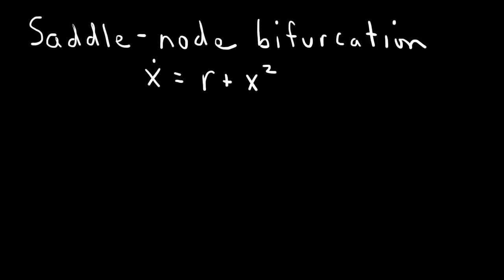Here I want to explain the saddle-node bifurcation. This is a bifurcation which occurs in a nonlinear equation — a one-dimensional bifurcation. The normal form of this bifurcation is x-dot equals r plus x squared, where r is the bifurcation parameter, and the bifurcation occurs at r equals 0.